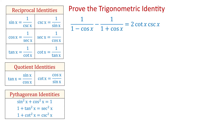To prove this identity, we have to show that we can change the expression on one side, or on both sides, so that both sides look identical. To the left, we have the fundamental trigonometric identities. I will start with the left side because it looks more complicated, and I will simplify it so that it looks identical to the right side.